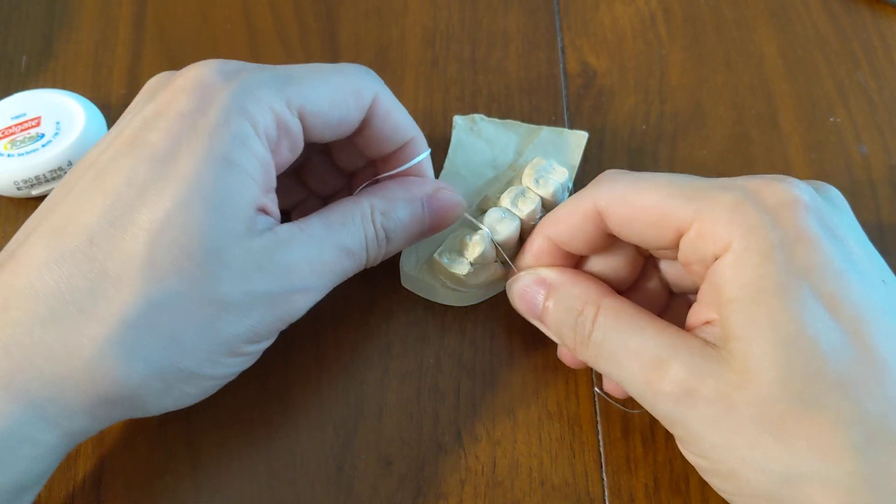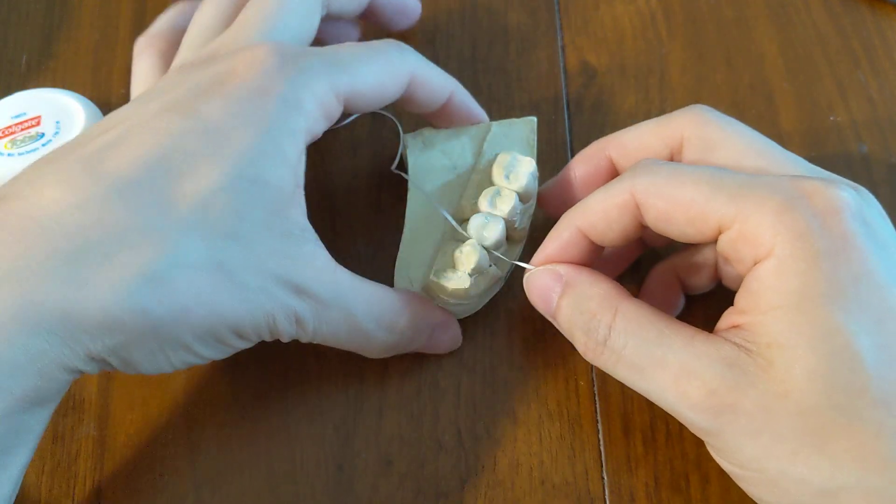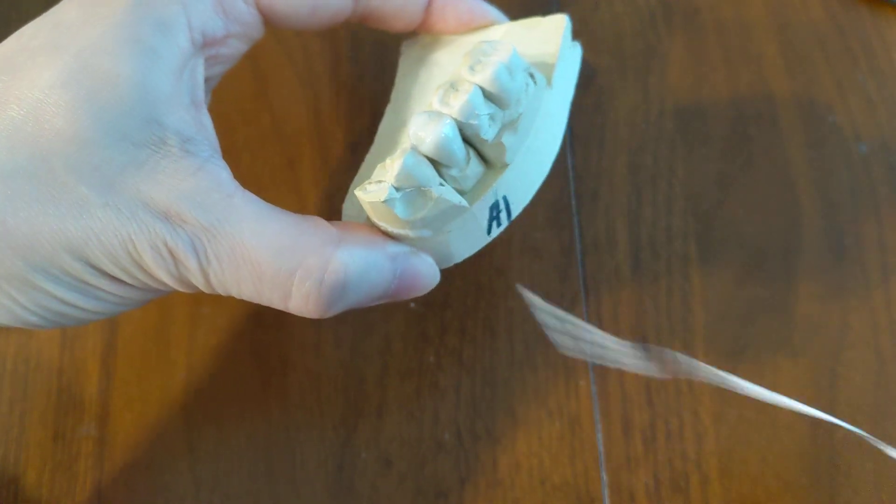You can do that for the front side too. Floss down, you can floss around, and then after you're done, pull out to the side.